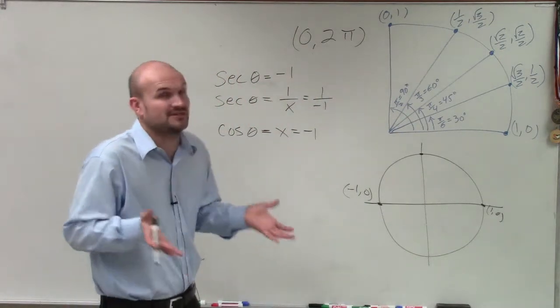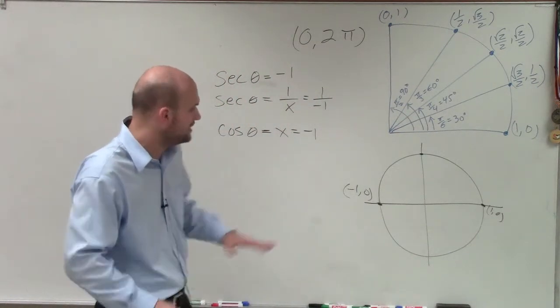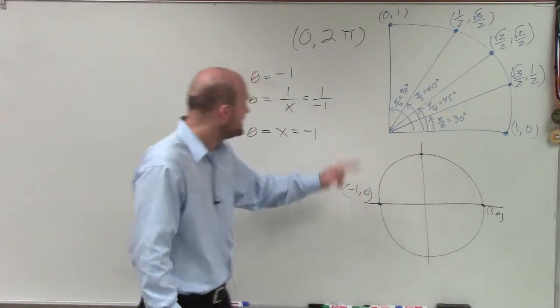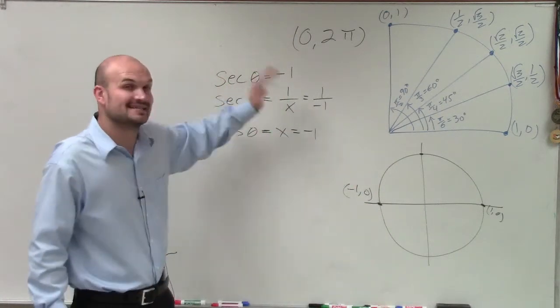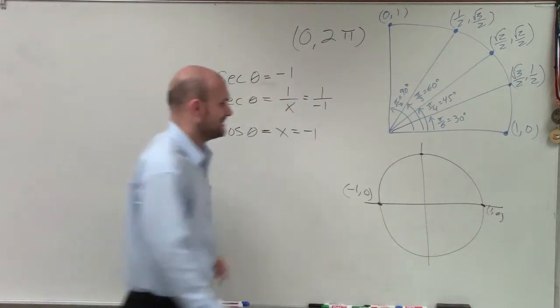So therefore, the x value is not going to be 0. So the only angle where x equals negative 1, and therefore, secant of theta is going to equal negative 1, is at this angle.